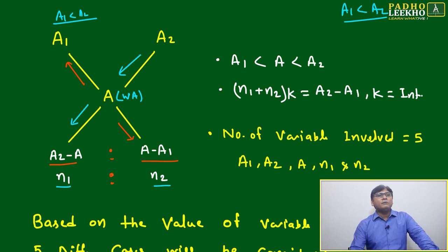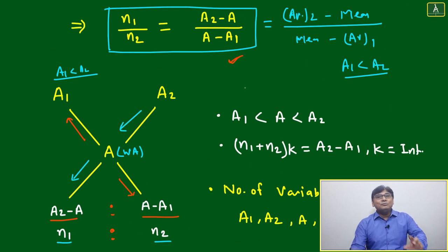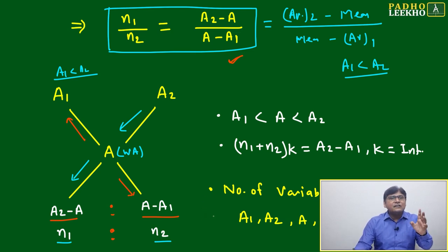Then the ratio of n1 by n2 will be in ratio. The ratio of n1 by n2 will be equal to A2 minus A divided by A minus A1. This will give you the ratio, not exact numbers. That is the only beauty of representation in terms of allegation, which respects the relative numbers.